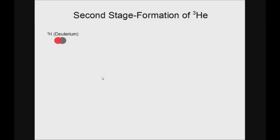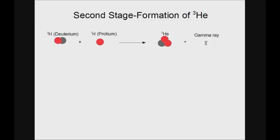In comparison to the first step, the remaining part of the hydrogen fusion process is relatively straightforward. In the second stage, the deuterium nucleus with one proton and one neutron, which was formed in the previous reaction, fuses with a proton nucleus to form a helium-3 nucleus and gamma rays. Gamma rays transport some of the energy away.